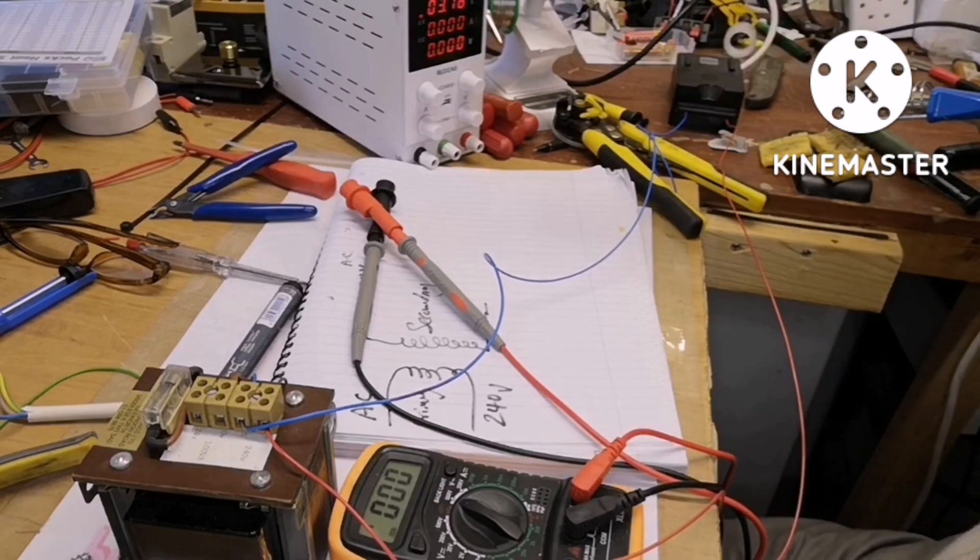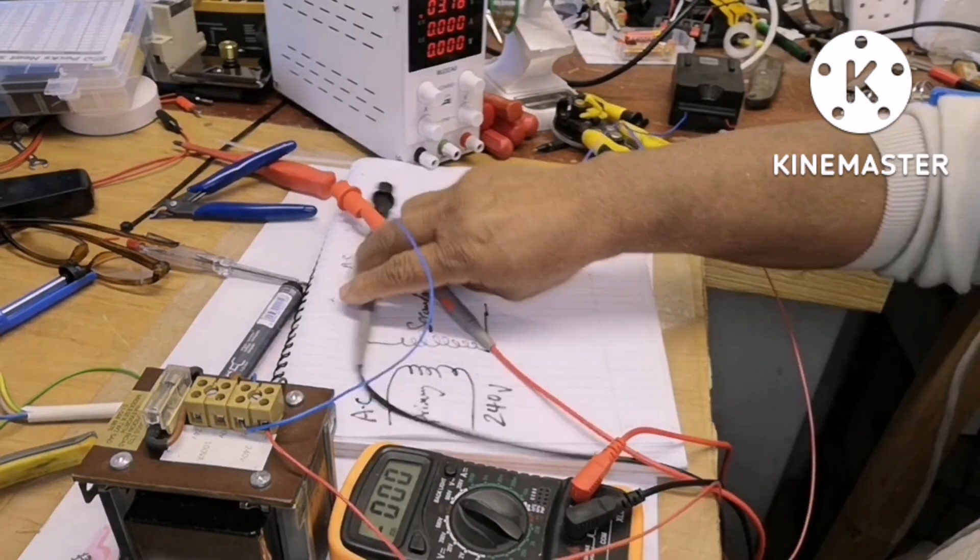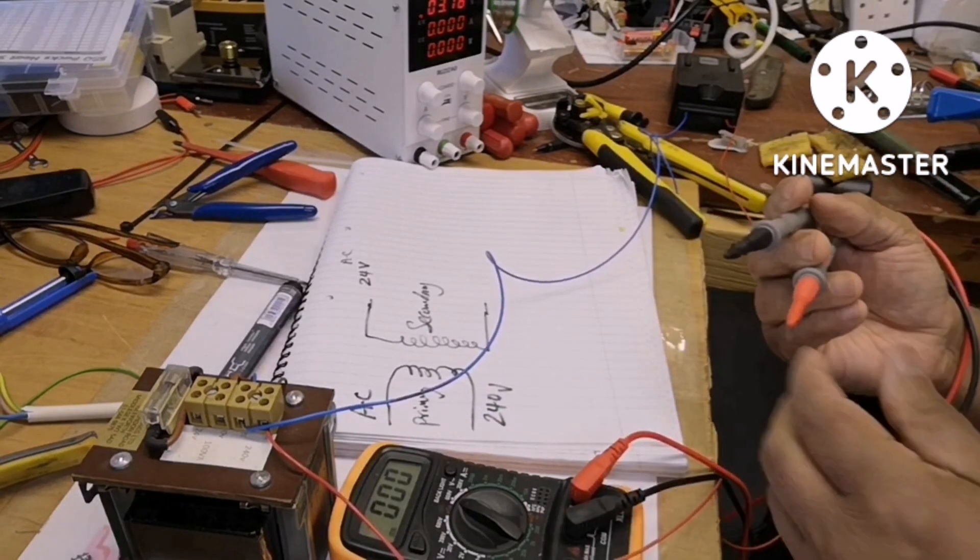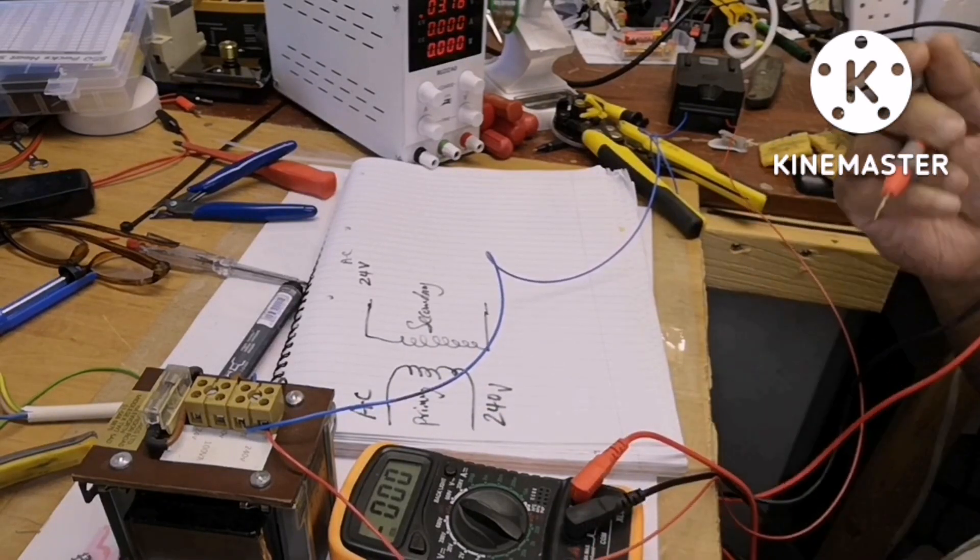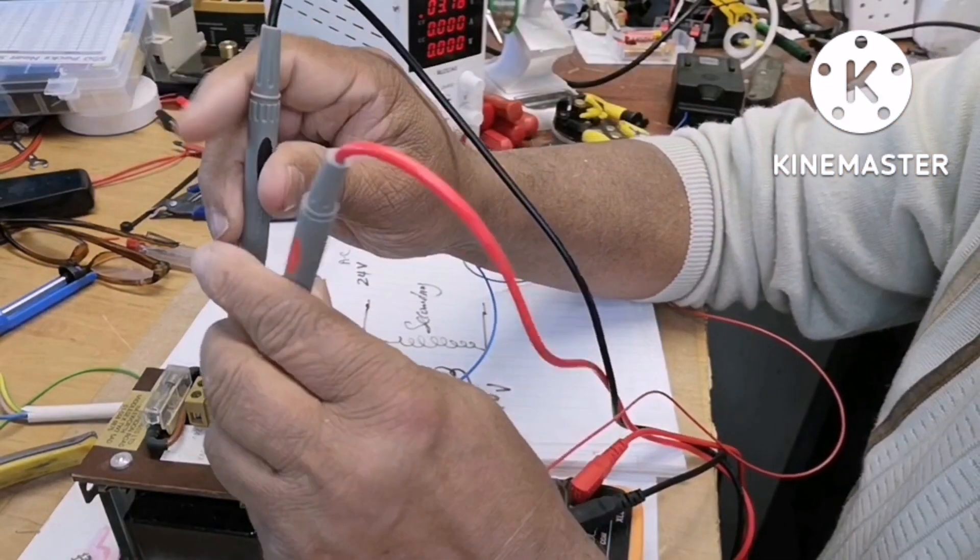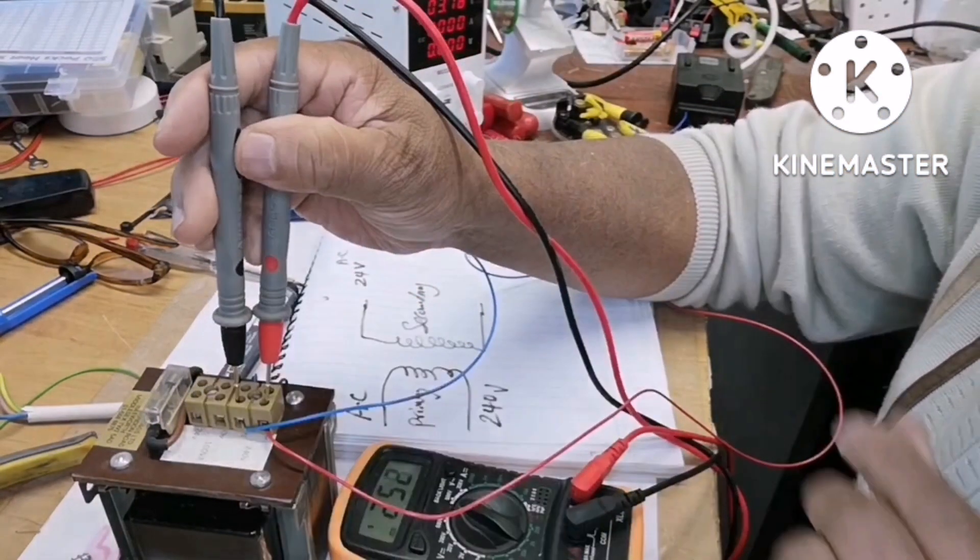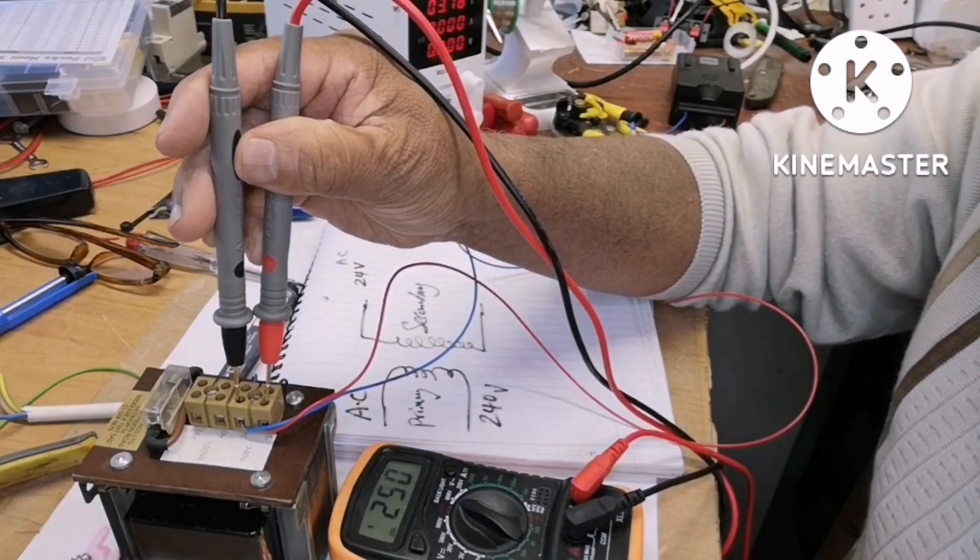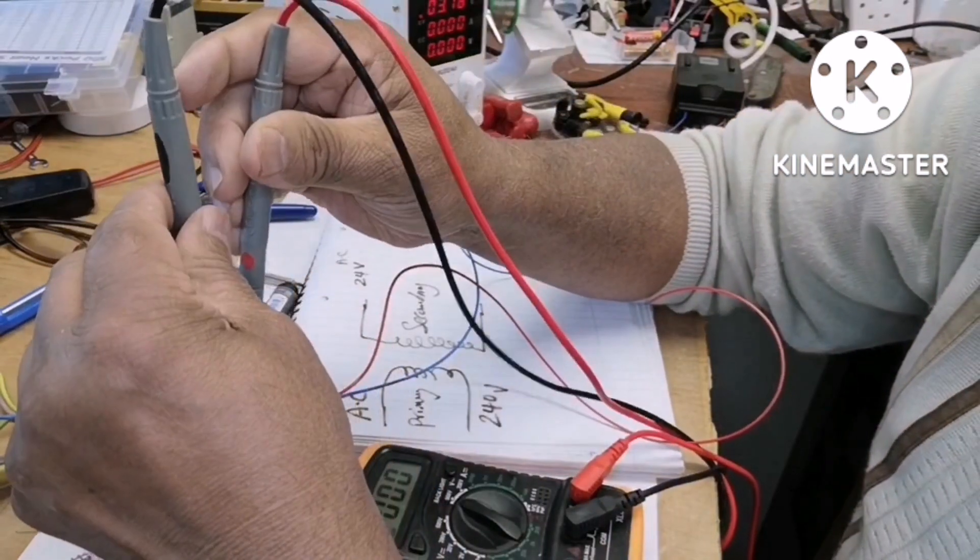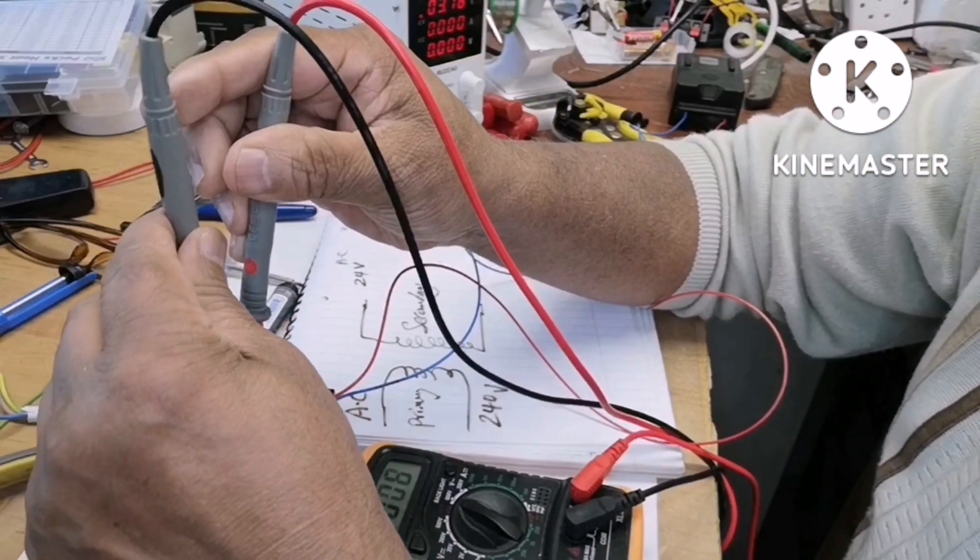Let's measure it. Setting the meter to AC. It's supposed to be 240 volts, but it is 250. That's without the load.